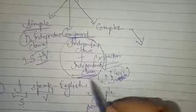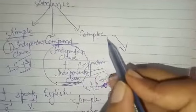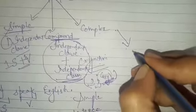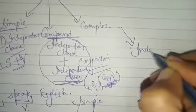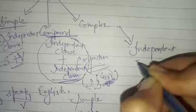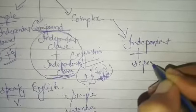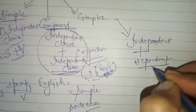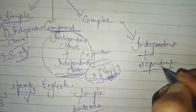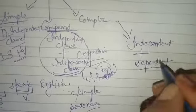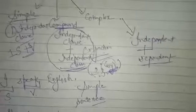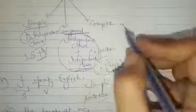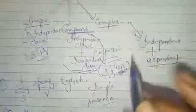Now come to complex sentence. Complex sentence is that where there is a combination of independent and dependent clause. So wherever independent and dependent clause is given together, are joined together in one sentence, that sentence is called a complex sentence. Complex sentence is all about clauses only.